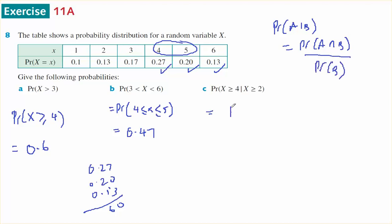So that would be the probability that X is bigger than or equal to 4 intersect X is bigger than or equal to 2, over the probability that X is bigger than or equal to 2.